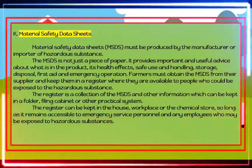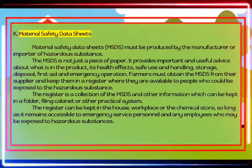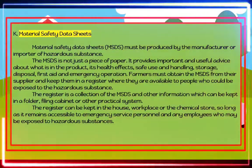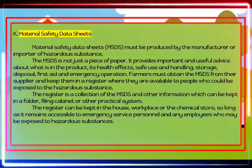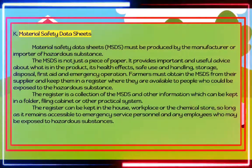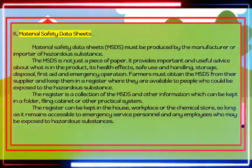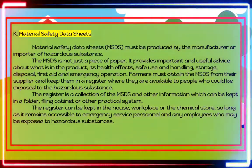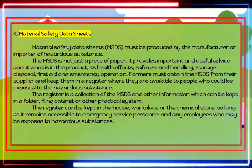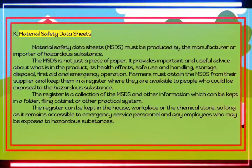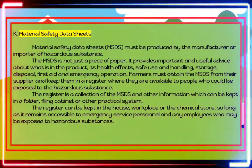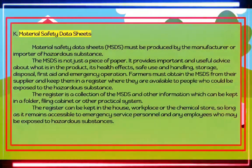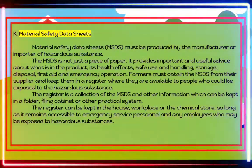Material Safety Data Sheets (MSDS): MSDS must be produced by the manufacturer or importer of hazardous substances. The MSDS provides important advice about what is in the product, its health effects, safe use and handling, storage and disposal, and first aid and emergency procedures. Farmers must obtain the MSDS from their supplier and keep them in a register accessible to people who could be exposed to the hazardous substance. The register can be kept in the house, workplace, or chemical store, so long as it remains accessible to emergency service personnel and employees.